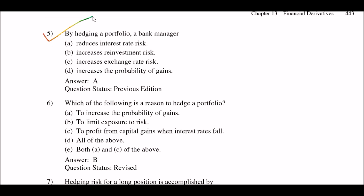Next question: while hedging a portfolio, a bank manager — option A: reduces interest rate risk; option B: increases reinvestment risk; option C: increases exchange rate risk; option D: increases the probability of gains. The right answer is option A: reduces interest rate risk.